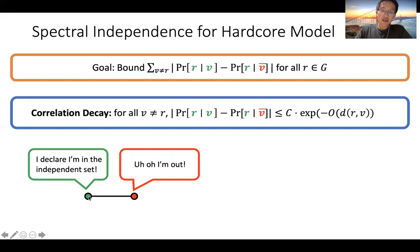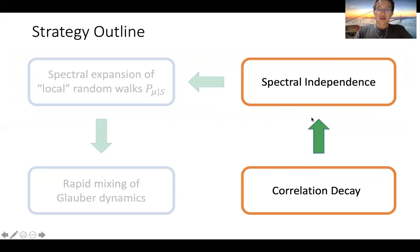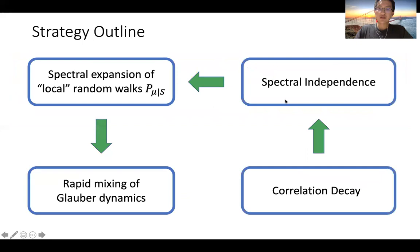The intuition is: if two vertices are neighbors, conditioning one to be in the independent set forces the other to be out — so they have large mutual influence. But if two vertices are very far apart, knowing the status of one does not much affect the status of the other. Having such a bound allows you to upper bound the total influence. See the paper for more details on how this works.